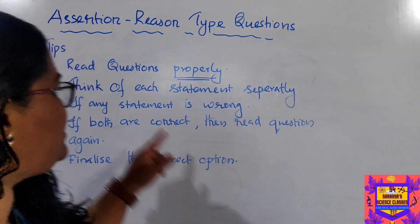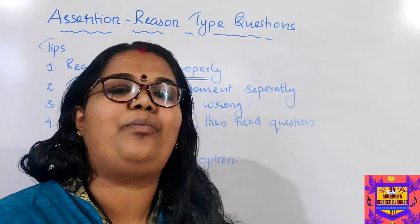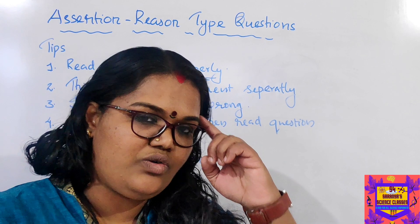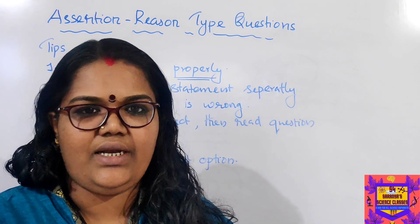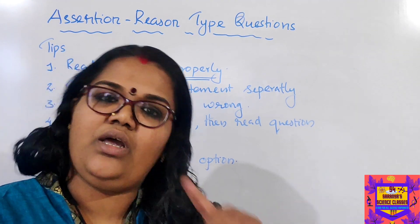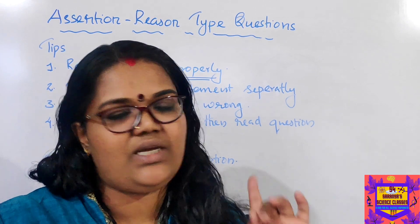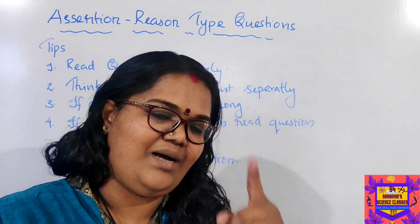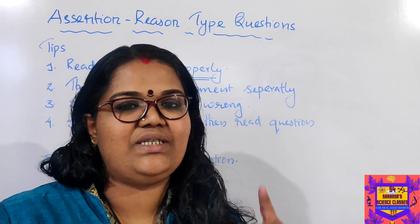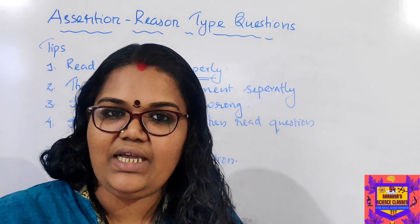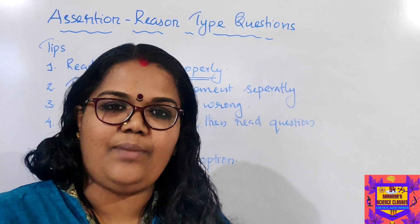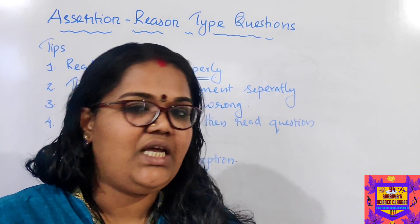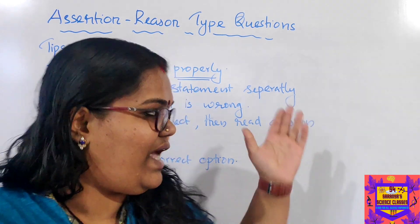To summarize the pattern: first, read the question properly. Second, think about each statement separately — assertion alone, reason alone — and decide whether each is correct. Third, check if either statement is wrong; if so, choose from option C or D easily. Fourth, if both statements are correct, read them together again and check whether the reason is the correct explanation for the assertion. If yes, option A; if not the correct explanation, option B. Then we will go for examples.